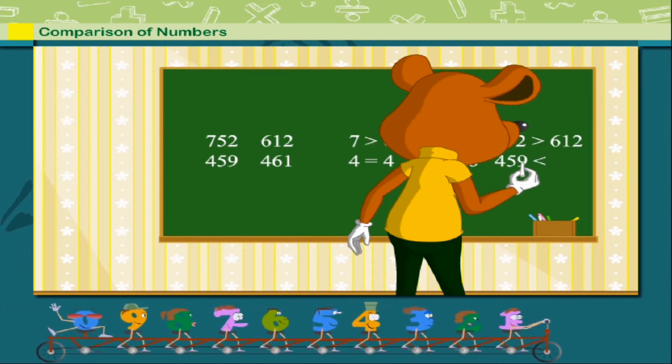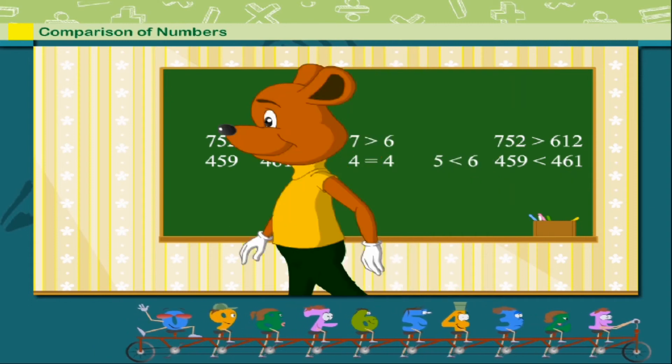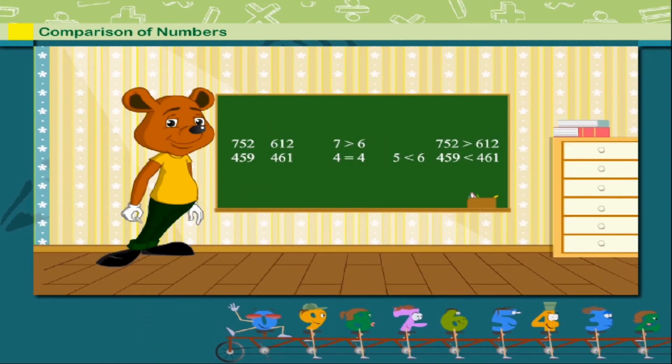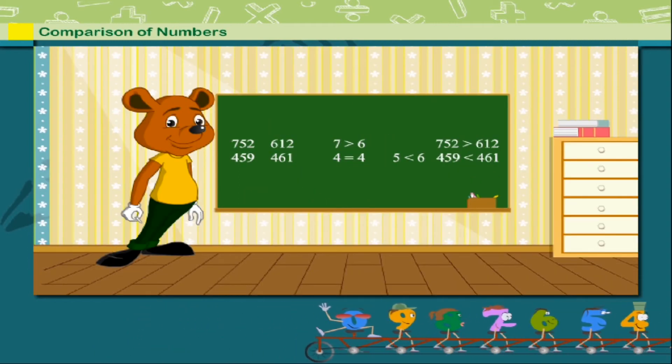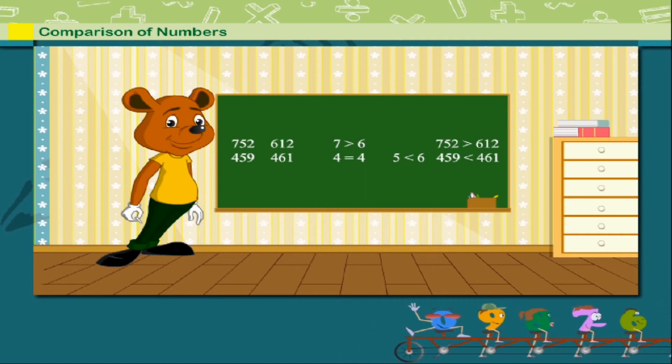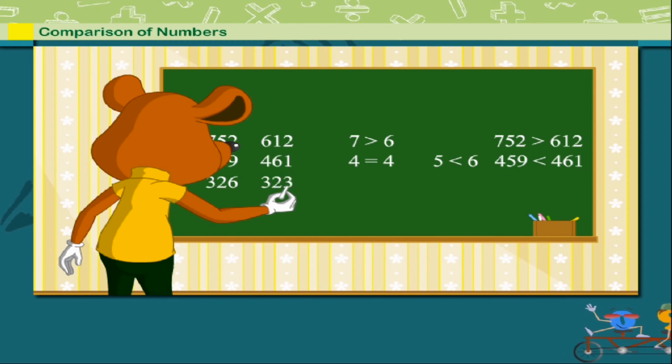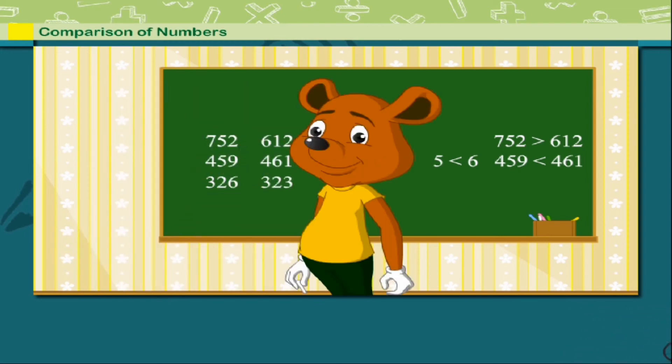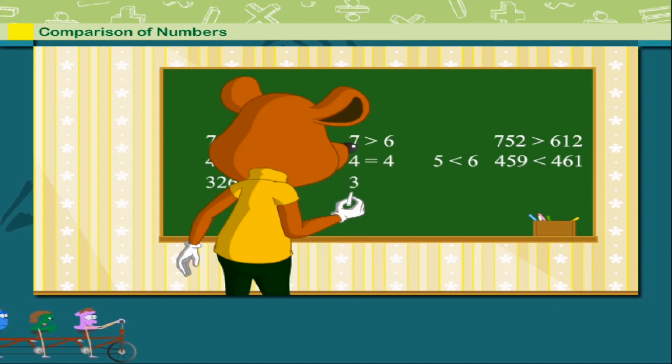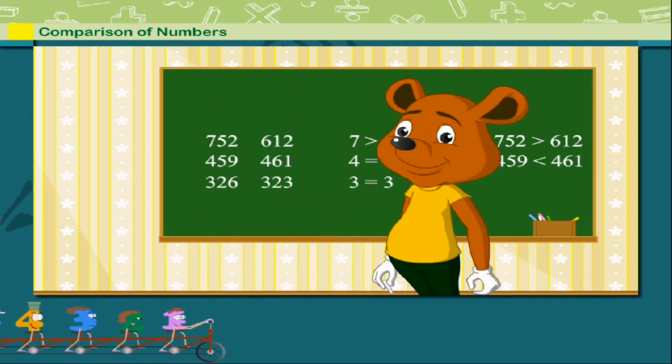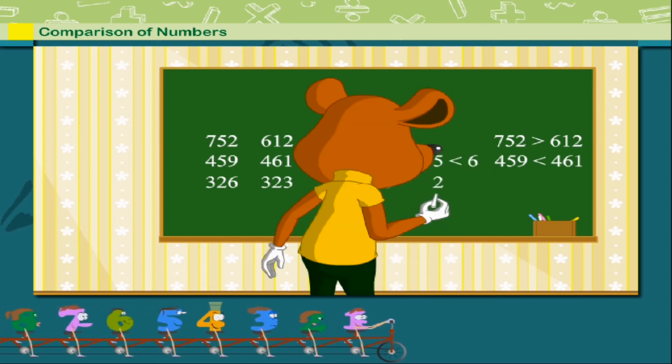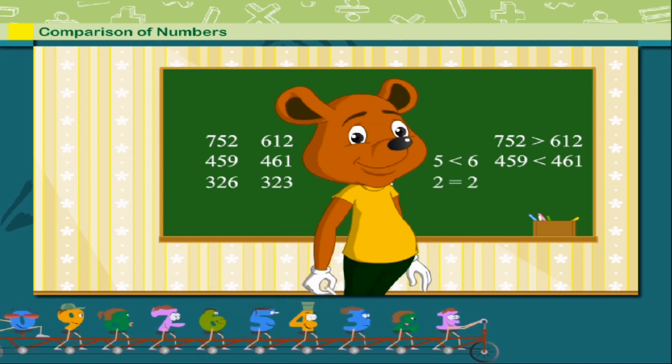He now compares the third set of numbers, that is three hundred and twenty-six and three hundred and twenty-three. Here the hundreds are equal, that is three is equal to three. Tens are also equal. Two is equal to two.